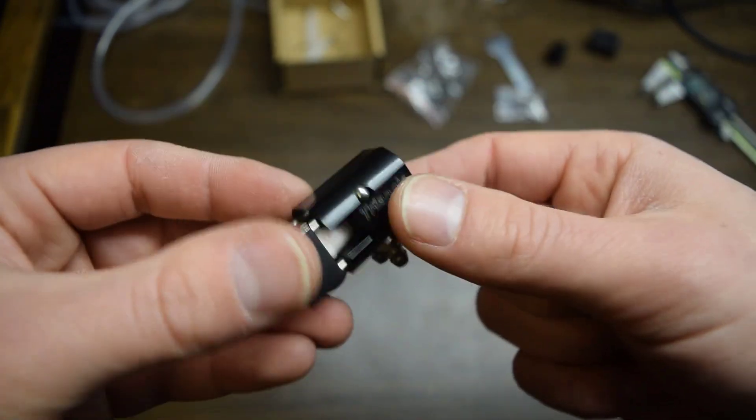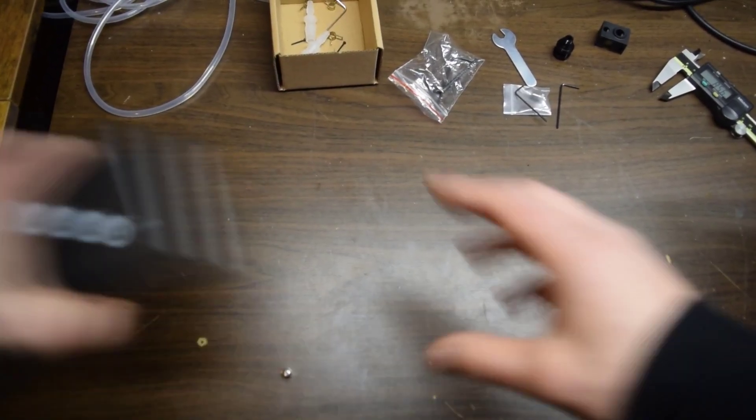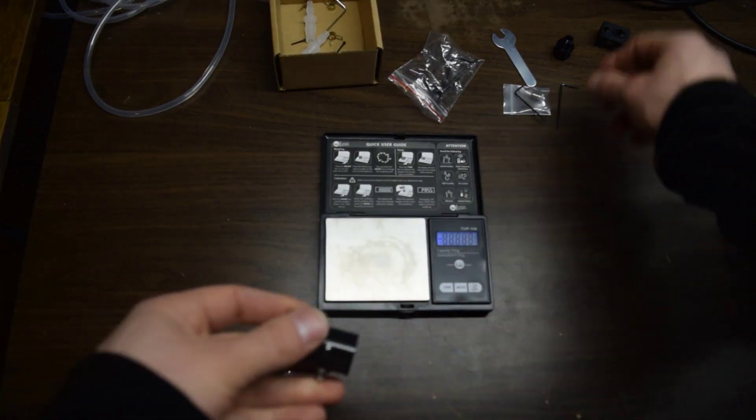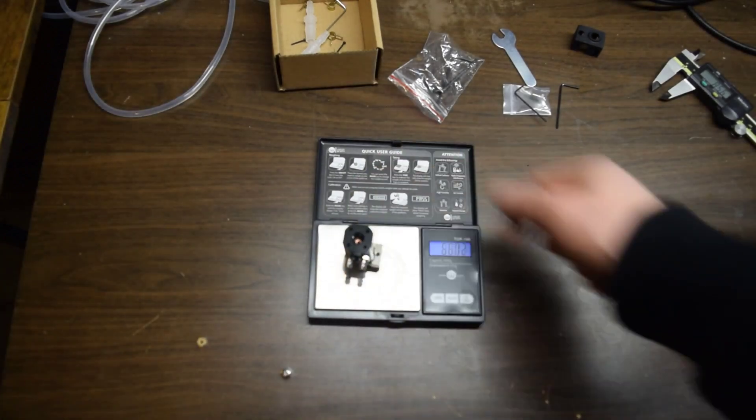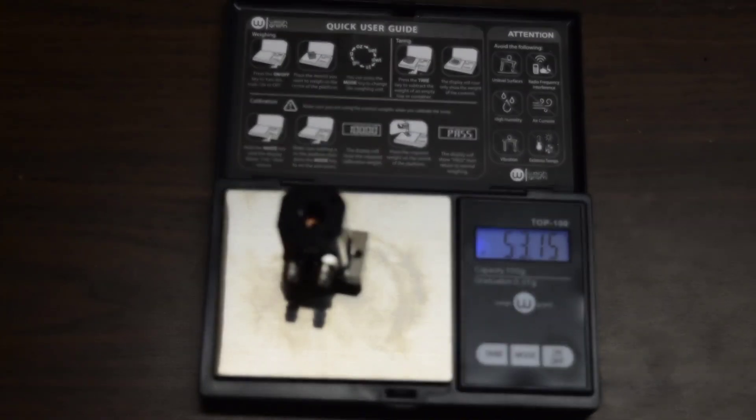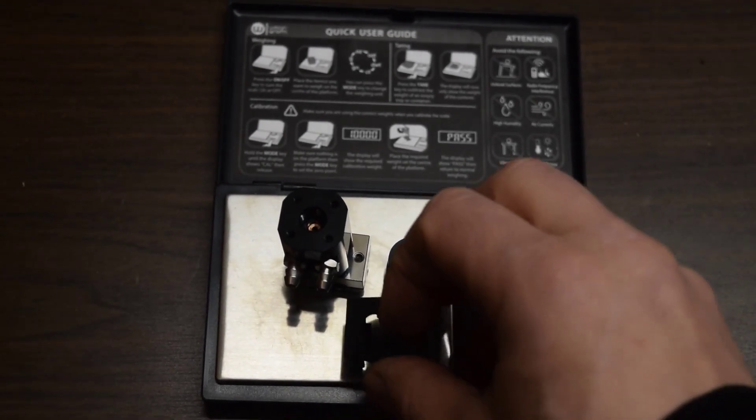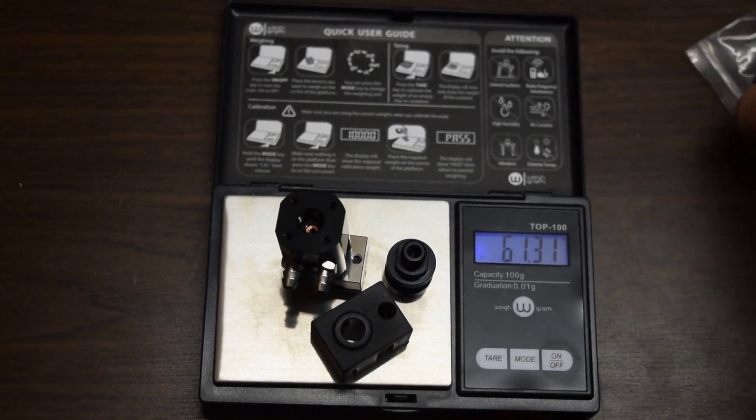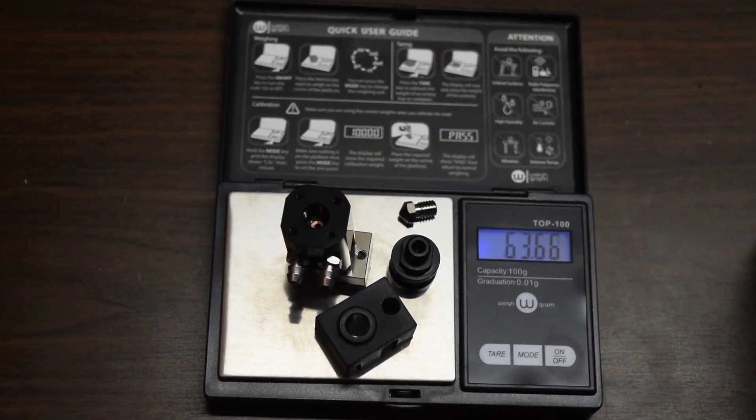Let's get a weight on this. No silicone sock, no nozzle, let's see what this weighs. Without the groove mount we're at 53.15 grams. With the groove mount we're at 58.8. With the silicone sock we're at 61.3. And then we'll throw the nozzle in there so this thing is fully outfitted, we are at 63.6 grams.